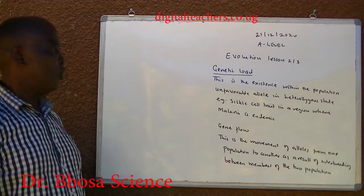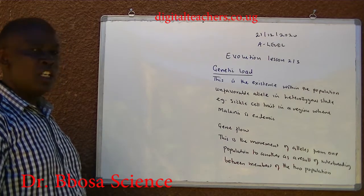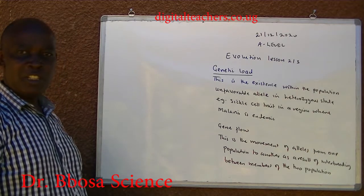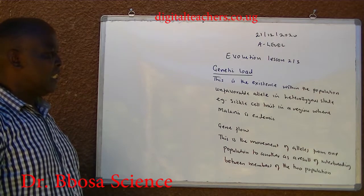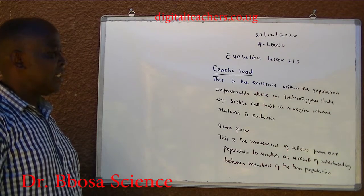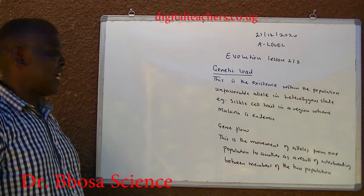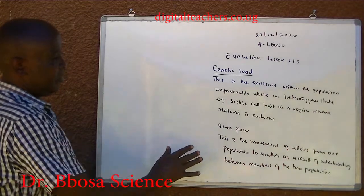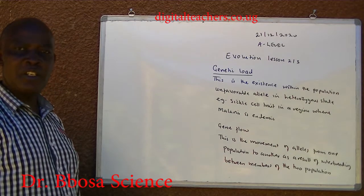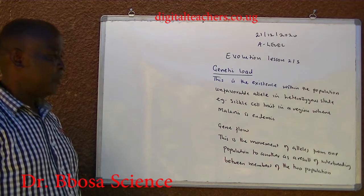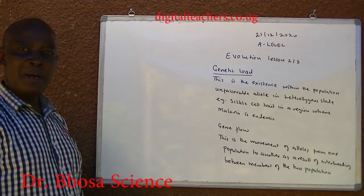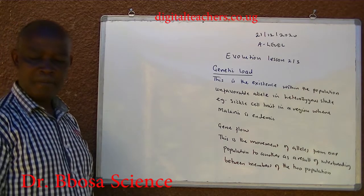Genetic load. This is the existence within the population of unfavorable alleles in a heterozygous state. For example, sickle cell trait in a region where malaria is endemic. Gene flow. This is the movement of alleles from one population to another as a result of interbreeding between members of the two populations.